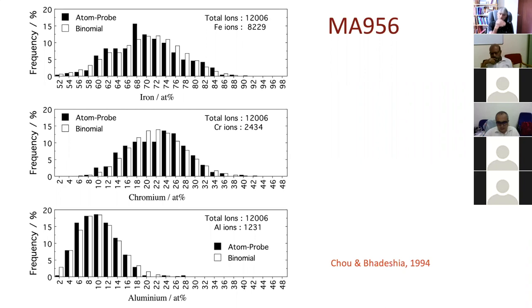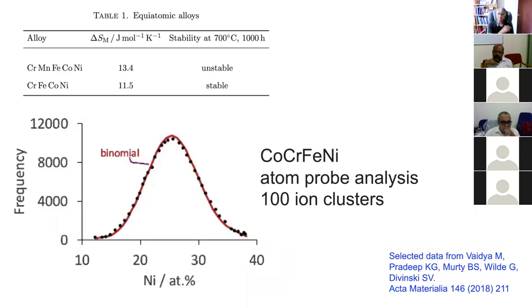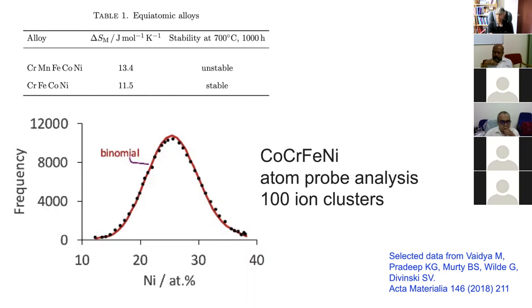As mentioned, the iron-chromium system shows spinodal decomposition at around 475°C. After holding within the spinodal temperature range, you can observe separation into chromium-rich and iron-rich regions. The way to decide whether atoms are distributed at random is to compare the chemical composition of small clusters against the binomial distribution. This was done for the high entropy alloy CocrFeNi system using 100-ion clusters, showing very good agreement with the binomial distribution after 1000 hours at 700°C.